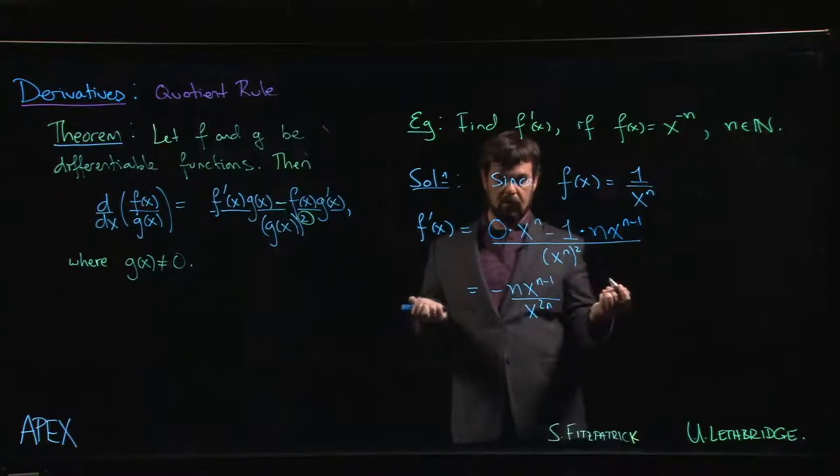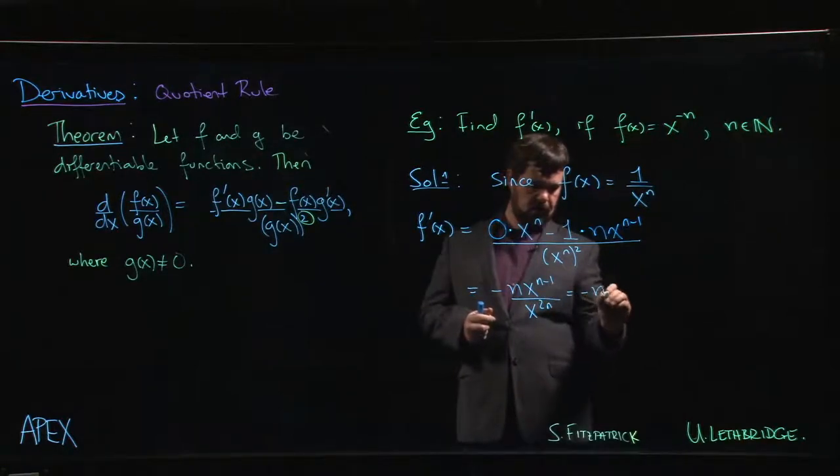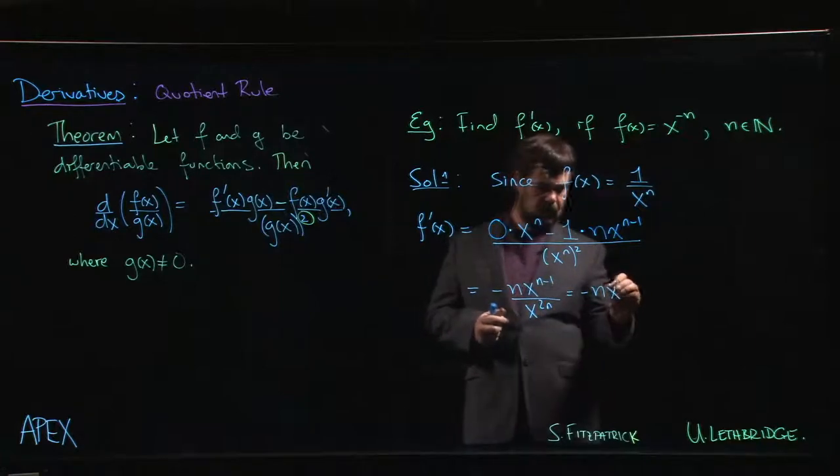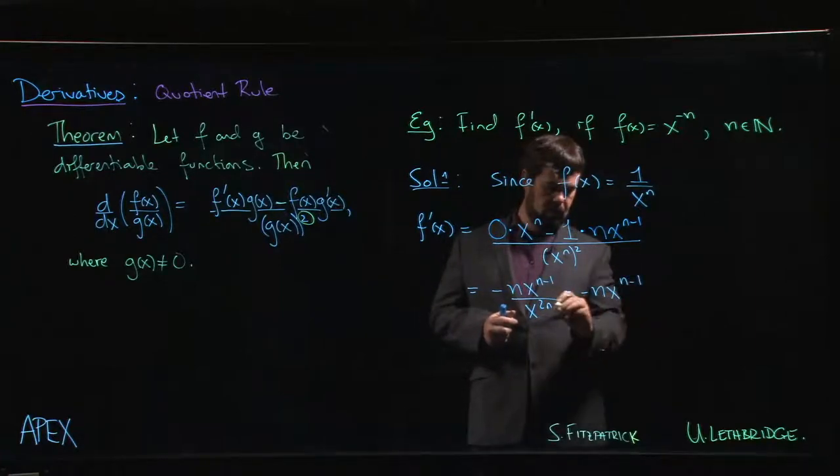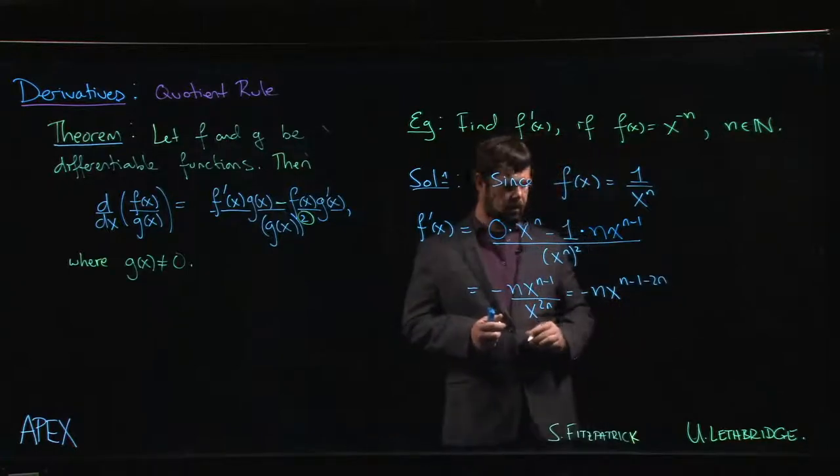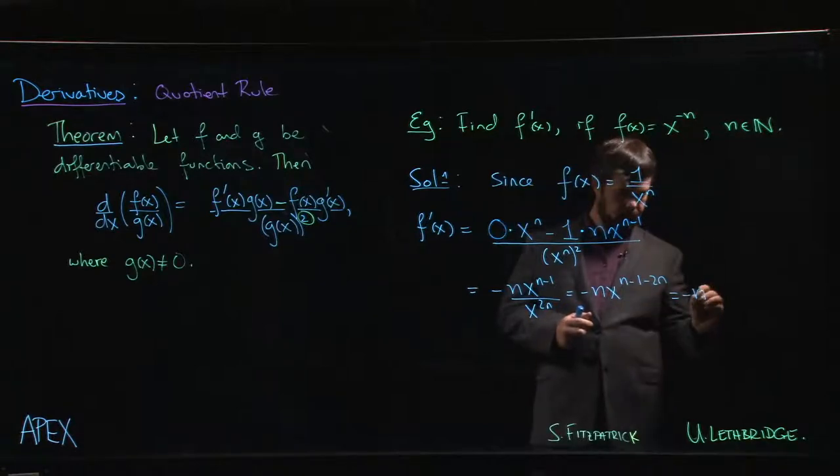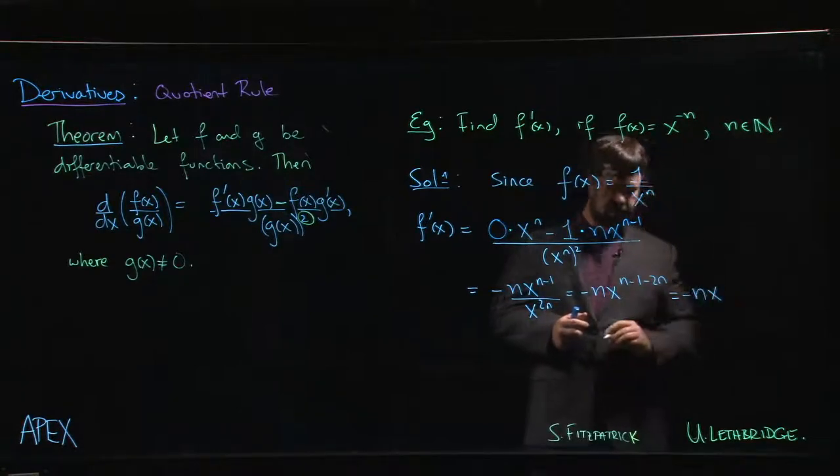So let's put it all up in the numerator. We have minus n x to the n minus 1 minus 2n, which is minus n times x to the minus n minus 1.